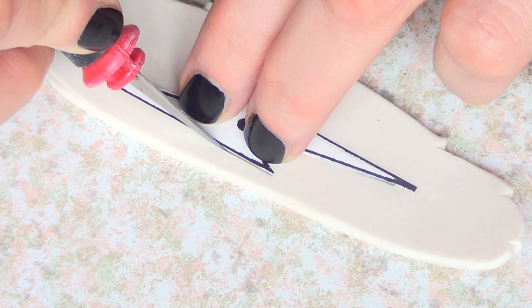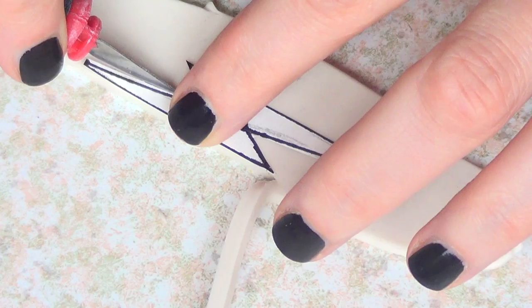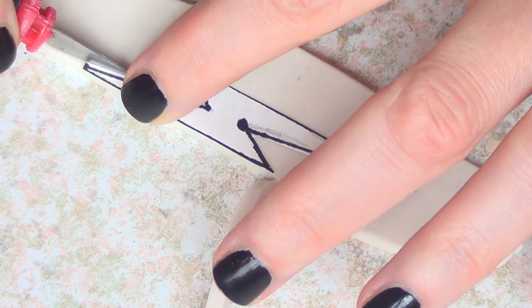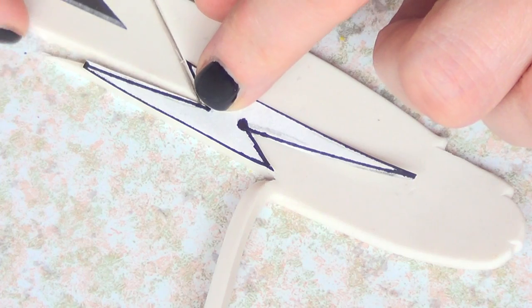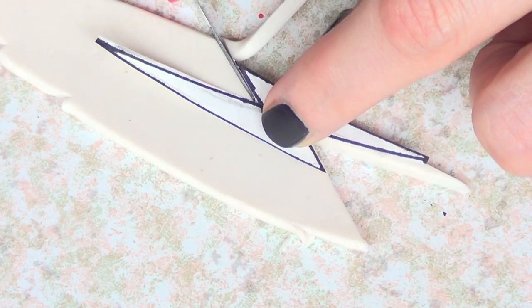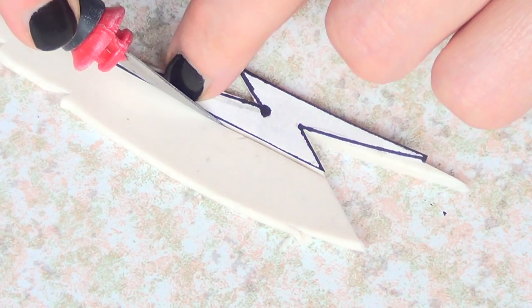I'm going to place my template on top of my piece of flat polymer clay and use my exacto knife to cut this piece. Just be careful because this tool tends to cut a lot. Be careful with it, especially on the edges—we want them to be pointy.